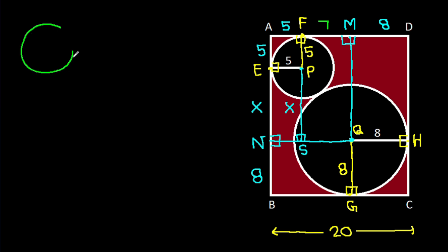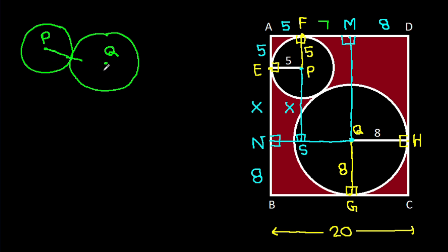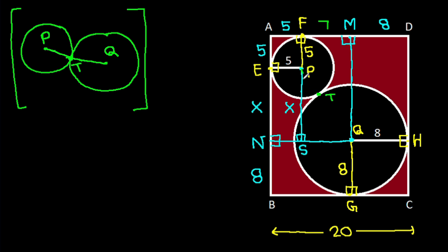If two circles are touching each other, and the center of one circle is P and the center of the other is Q, then if we join PQ, it will pass through the common point of contact — suppose T. So PT equals 5 and QT equals 8, therefore PQ equals 5 plus 8 equals 13.